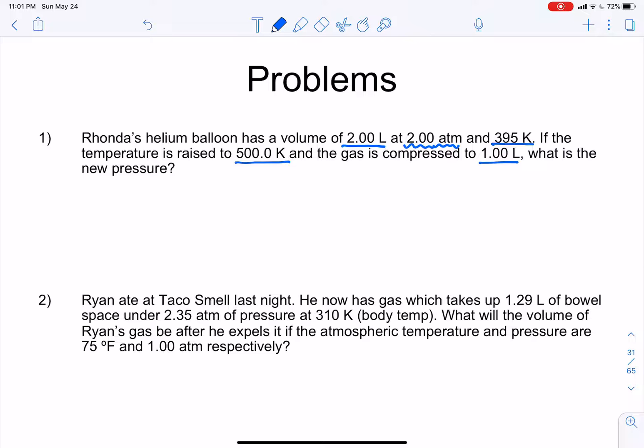Okay, so what we have here is we have volume, because liters is a unit of volume. And 2 atm, that's a pressure. Atm is a unit of pressure. And 395 Kelvin, that's a temperature. And then it says that we raise the temperature to 500 Kelvin. So we've got another temperature there. And if we've got two of them, we've got to have T1 and T2.